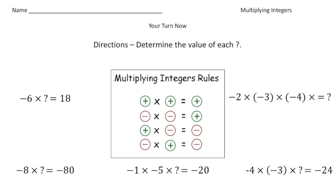All right, welcome back. Let's go over these practice problems. The first problem was negative six times blank equals 18. We have a negative times a mystery number equaling positive 18, so this has to be a negative. The answer is negative three.